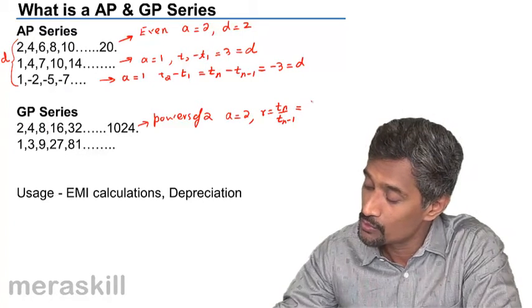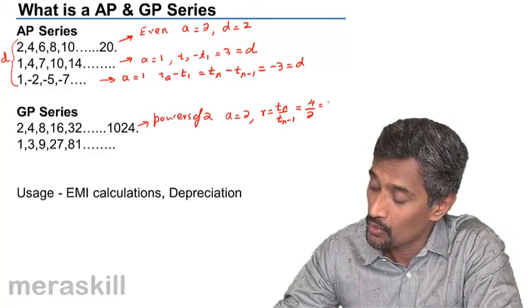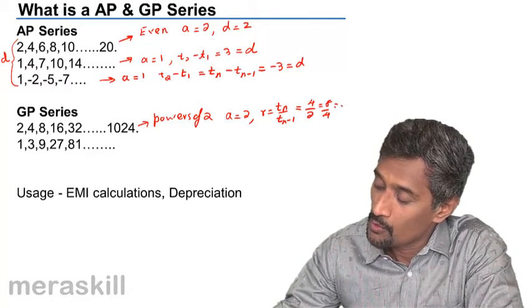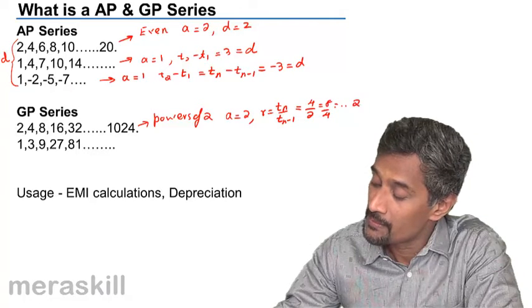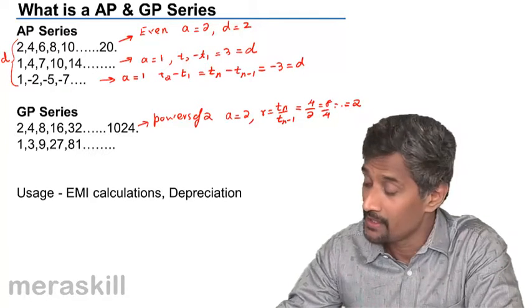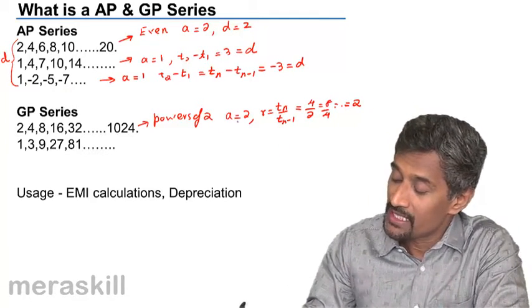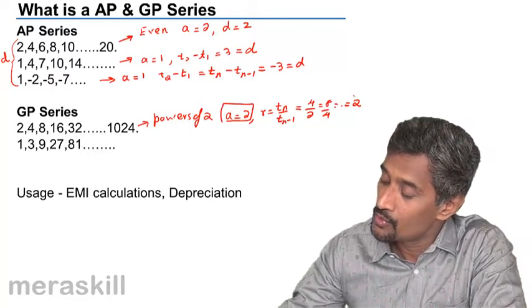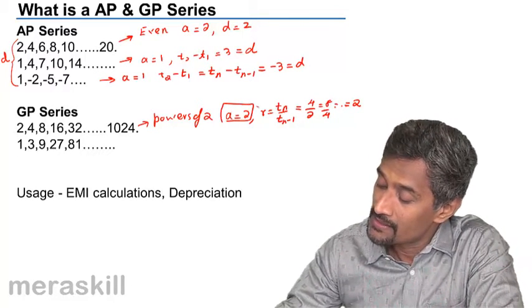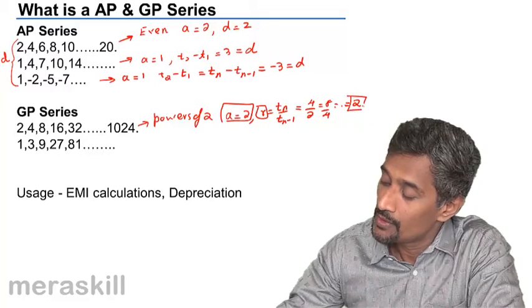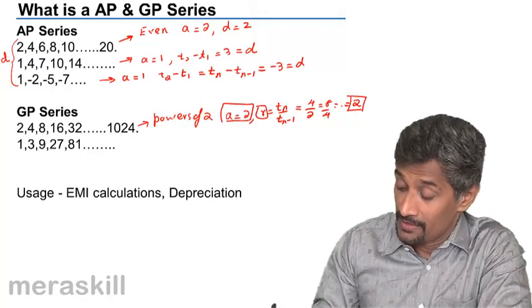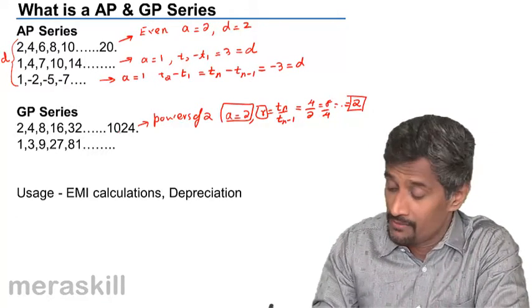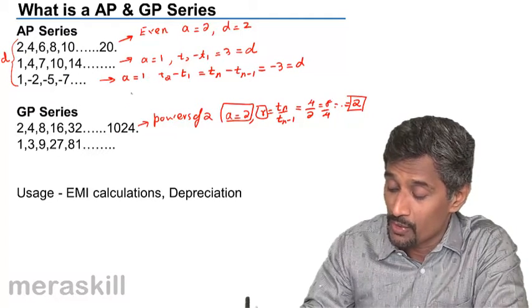If you see 4 by 2, which is 2, or 8 by 4 is 2. You can take it as 4 by 2, or 8 by 4, or whatever—the common ratio is 2. In this case, a is 2 and r is also 2. This is geometric progression.